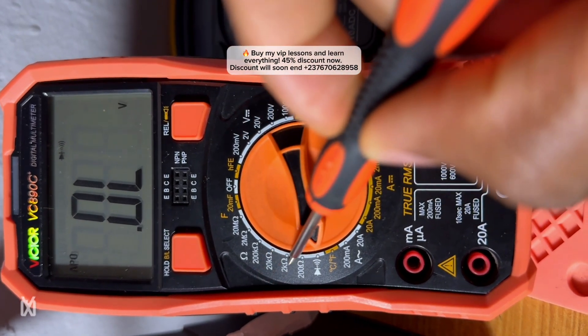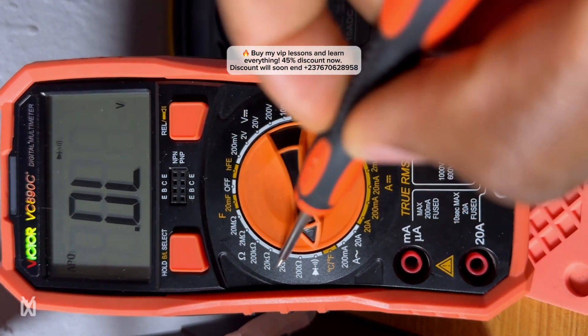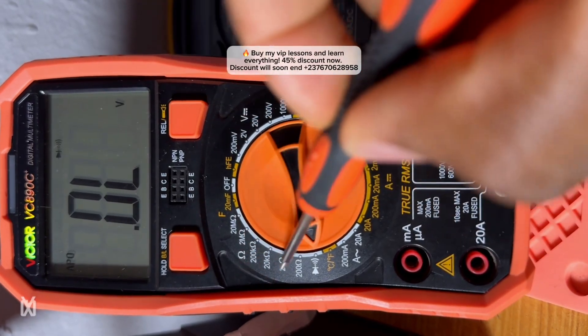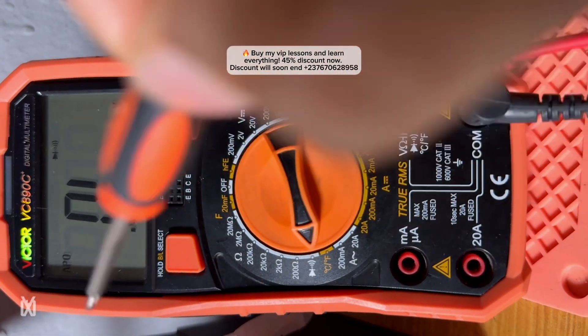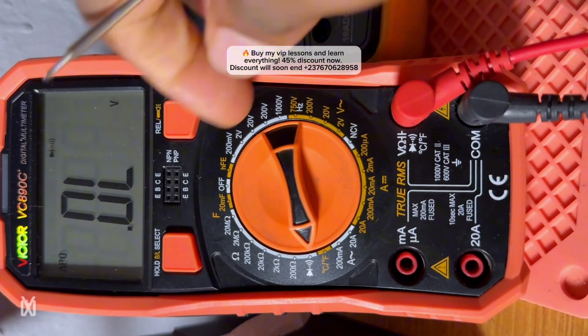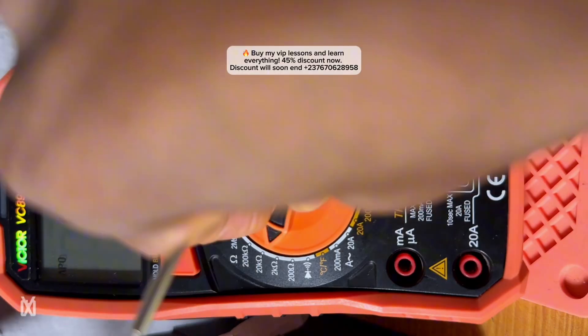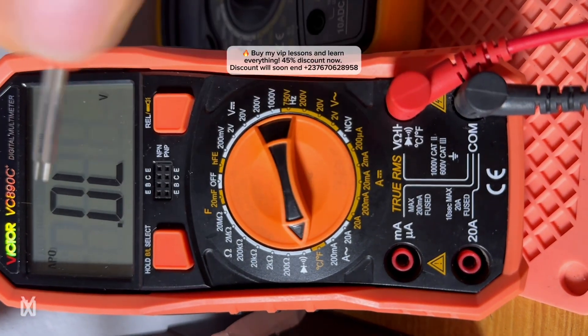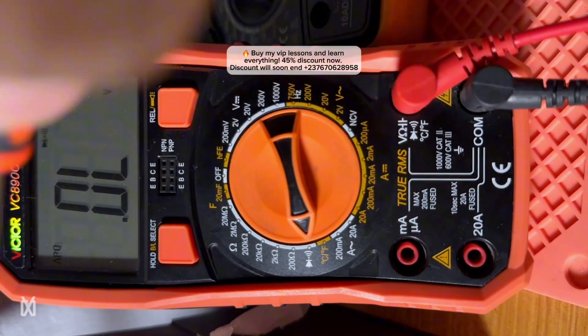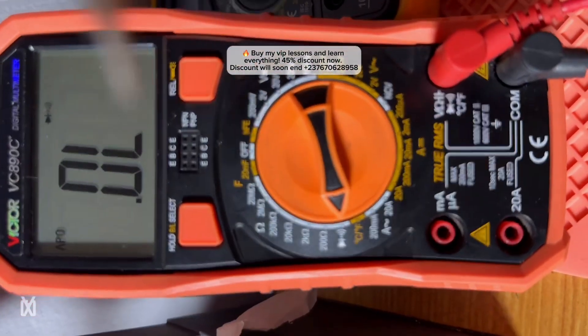When I am troubleshooting mobile phones, it depends on the type of fault, depends on the circuit that I'm working on, depends on the components that I am working on. So you see all these ranges right here, this is the resistance range which is to test resistors with different values.